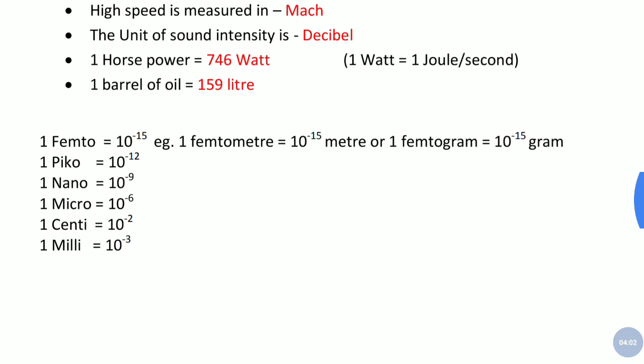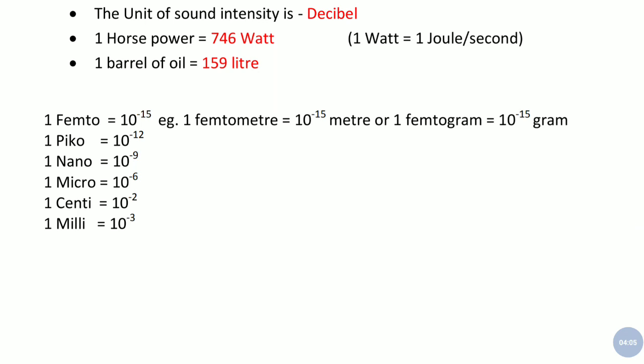Now I will tell you some of the units which are measured and frequently asked in examinations. One femto equals 10 to the power minus 15. One pico, 10 to the power minus 12. One nano, 10 to the power minus 9. Micro is 10 to the power minus 6. Centi is 10 to the power minus 2. Milli equals 10 to the power minus 3. So suppose someone asks you one picometer is equal to, then your answer will be 10 to the power minus 12 meter.